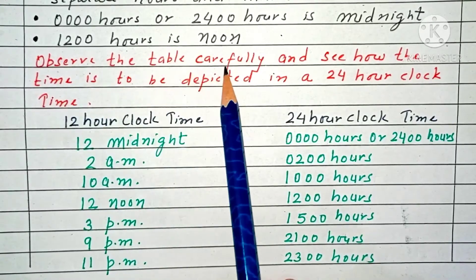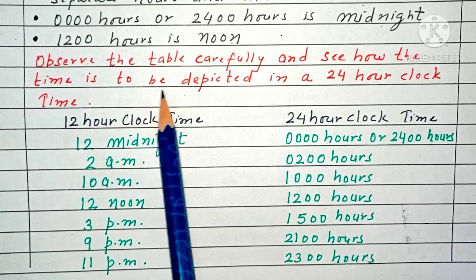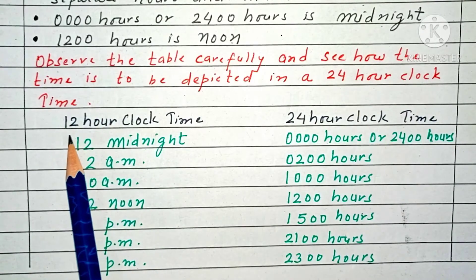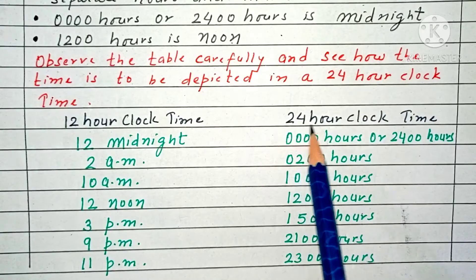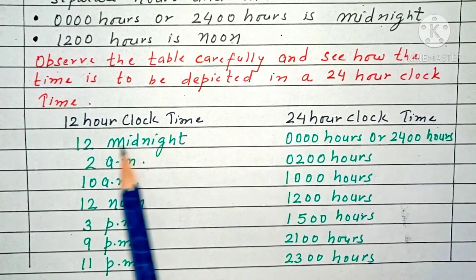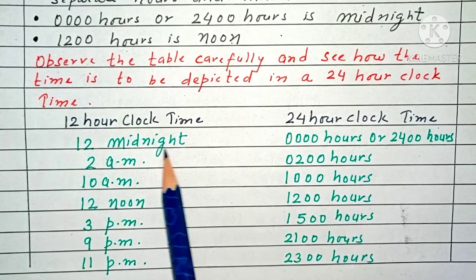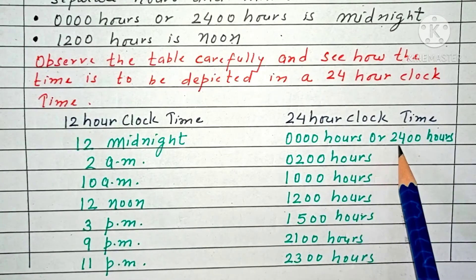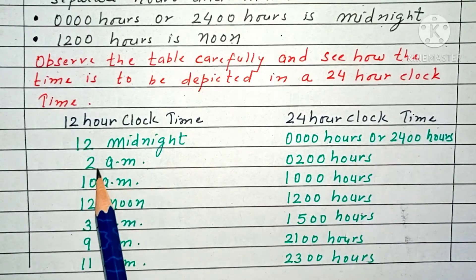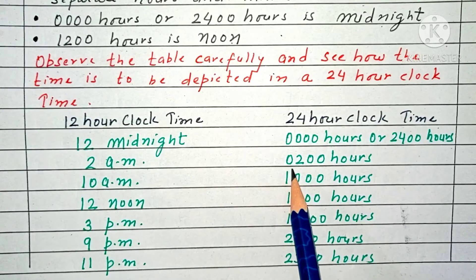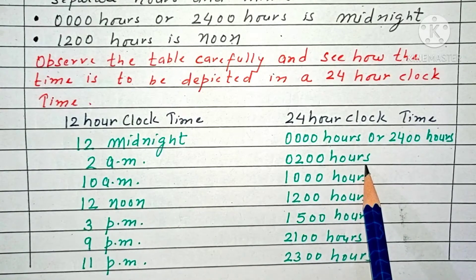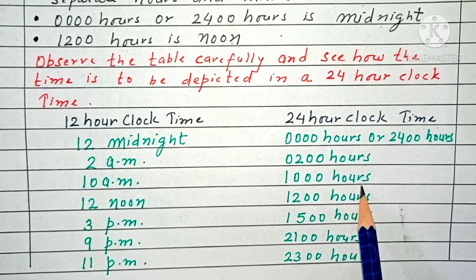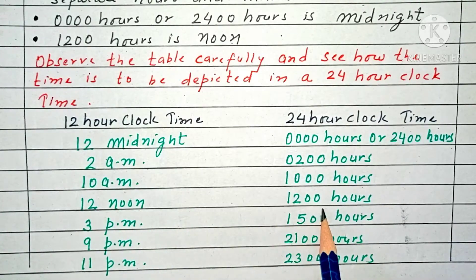Observe the table carefully and see how the time is depicted in a 24-hour clock. See the time shown in 12-hour clock time and 24-hour clock time. 12 midnight is 0000 hours or 2400 hours. 2 AM is 0200 hours. 10 AM is 1000 hours. 12 noon is 1200 hours.